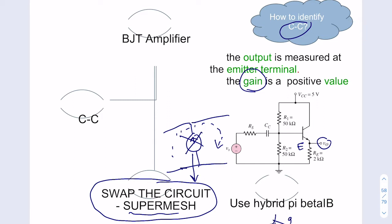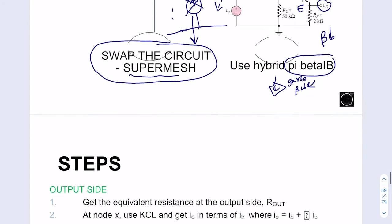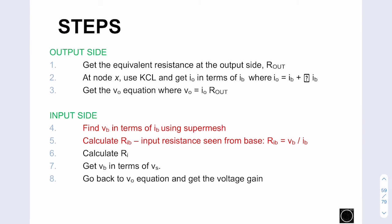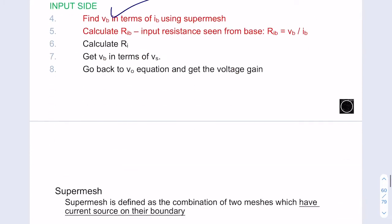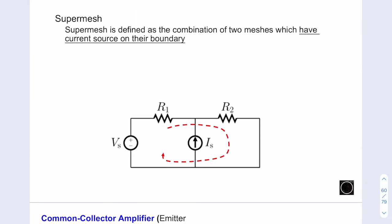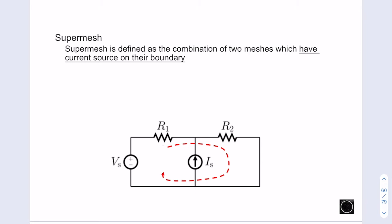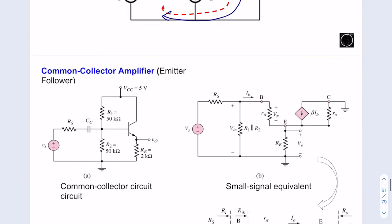For the common collector hybrid pi model, you have two options: GM·VBE or beta·IB. For common collector, you need to use beta·IB. You will start with the output side and then move to the input side where you will have the super mesh in the KVL equation. Super mesh means there is a current source in between two loops — you ignore that current source and make a loop across the two loops using the KVL equation.